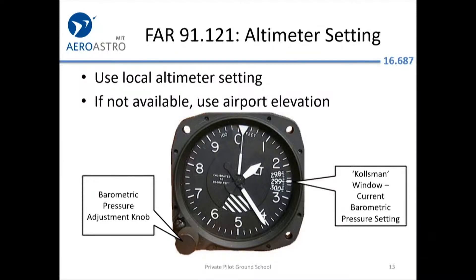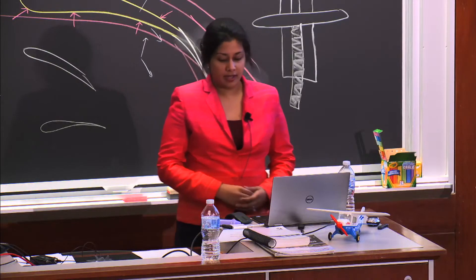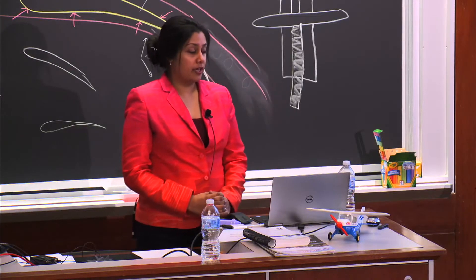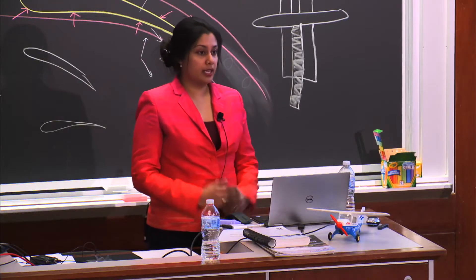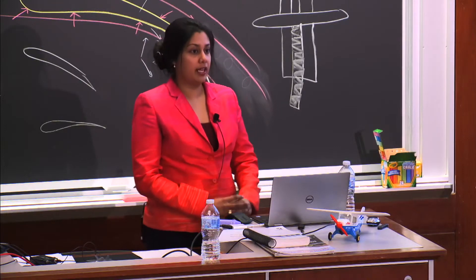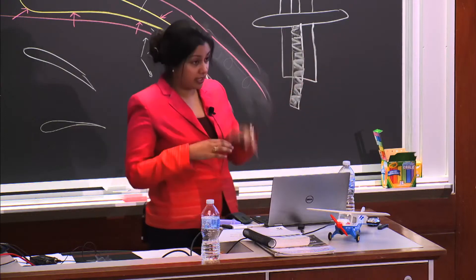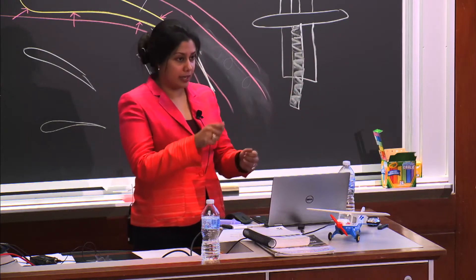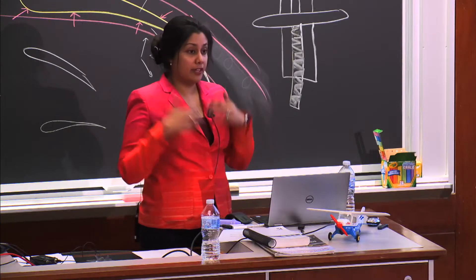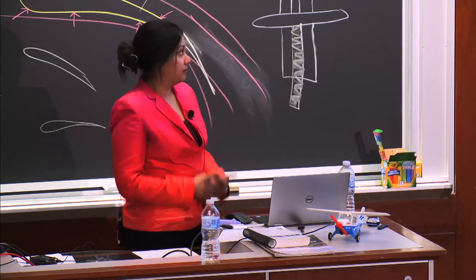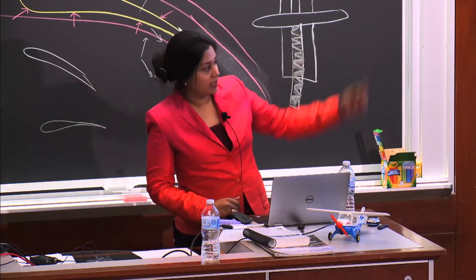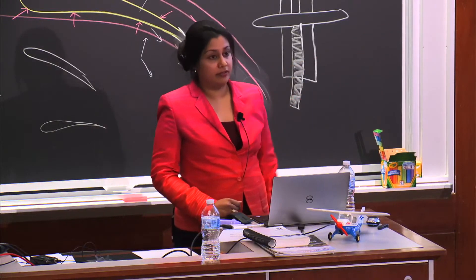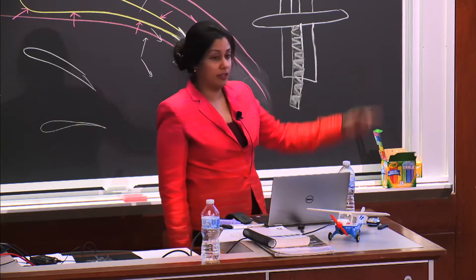If the local altimeter setting isn't available, you already have the airport elevation. For a given airport, the chart tells you what the elevation is. If you know the airport is at 100 feet elevation and you're sitting on the ground setting up before takeoff, you can keep turning the dial until it says 100 feet, and that'll give you the setting in the window.